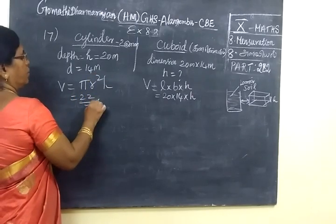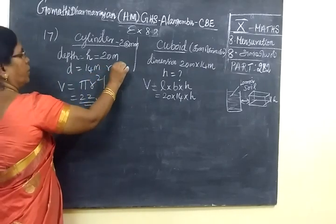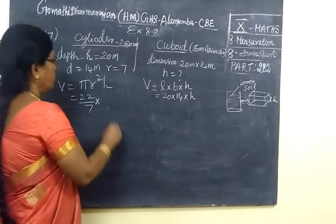Yes, so 22x7. This is the diameter. R is 7. Yes, diameter is equal to 14. Therefore, R is equal to 7.